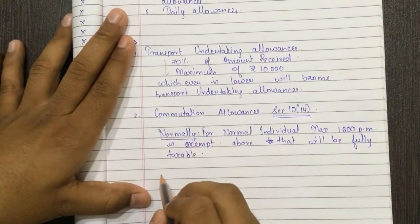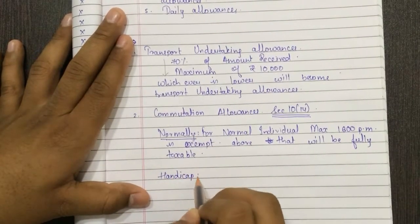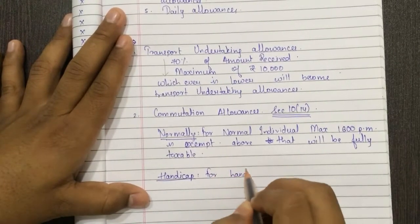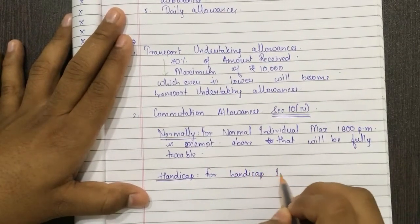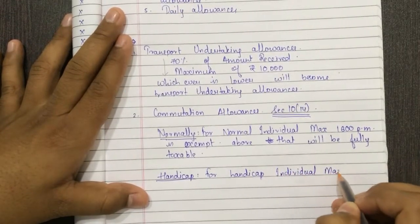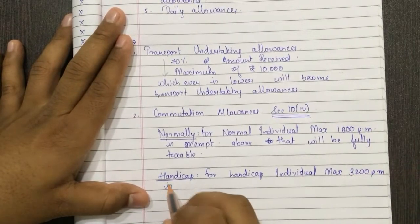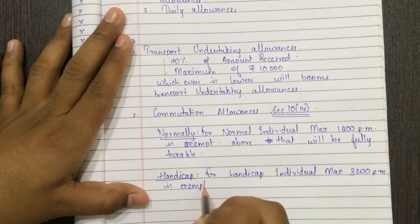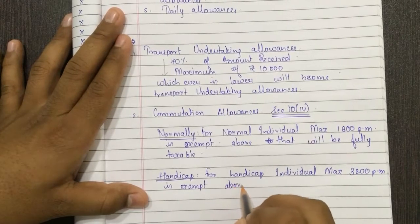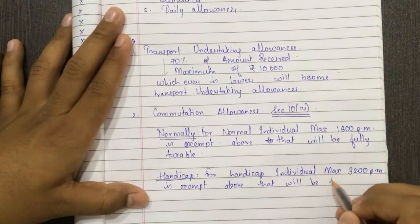For a handicapped individual, a maximum of ₹3,200 per month is exempt. Above that, it will be fully taxable.